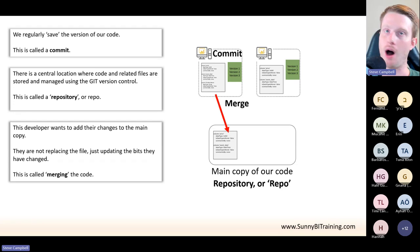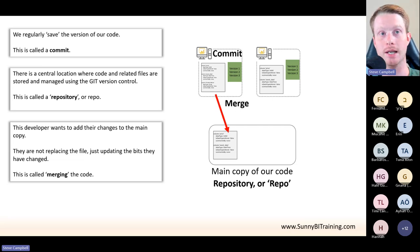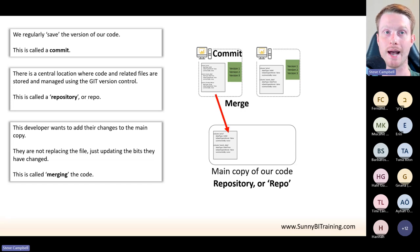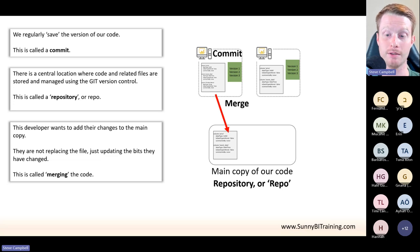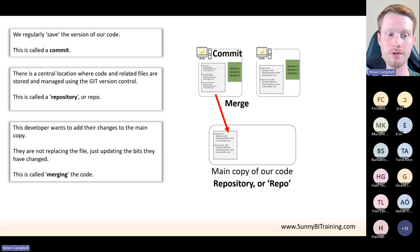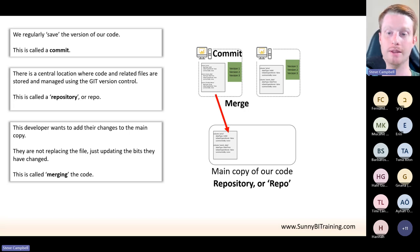The reason we call it a merge is I'm not replacing the main copy of the code with my version. What I'm doing is just updating the little bits of code that I've changed in the main copy. This is a really important concept — this is what makes it work. Everyone can have copies, they can all be working independently. When we go back and say we've finished and want to merge it back to the main repo, we're just changing the bits we changed. So: commit is saving locally; repo is the main copy; merge is updating the bits of code we changed in the main version.